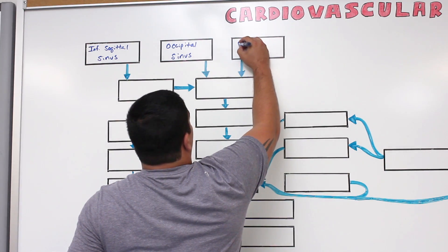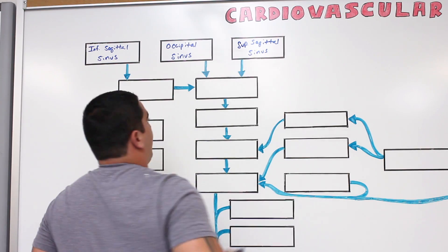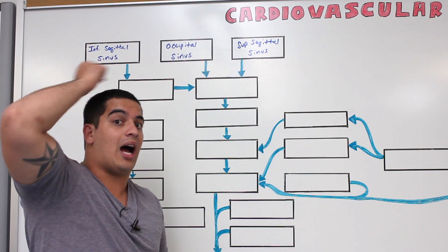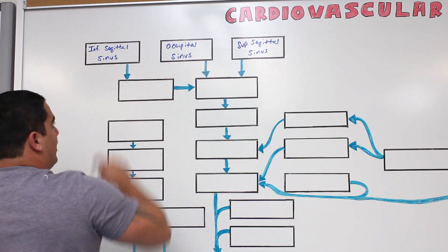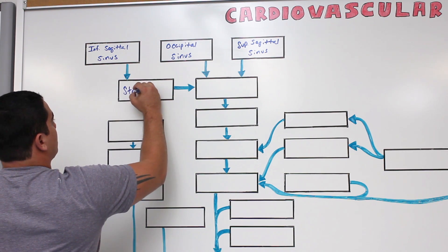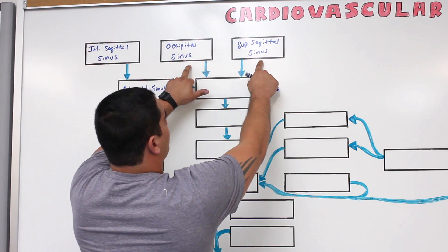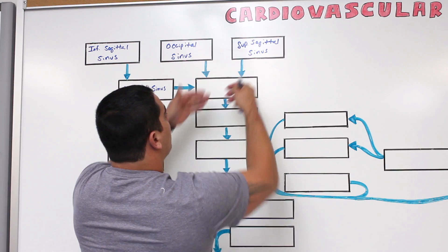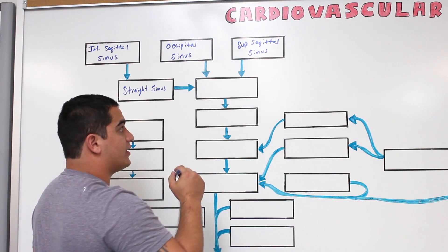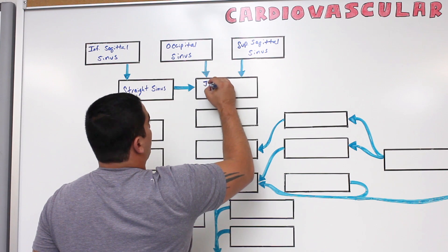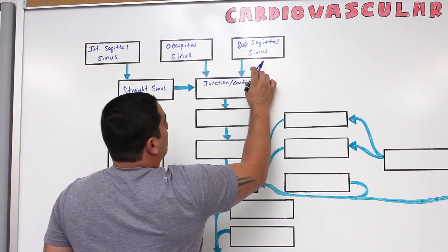Another one is called the superior sagittal sinus. The superior sagittal sinus also runs within the falx cerebri, just in the upper part. The inferior sagittal sinus empties into a special structure called the straight sinus. Then the occipital sinus, the superior sagittal sinus, and the straight sinus all empty their blood into one joined area called the junction or confluence of the sinuses.